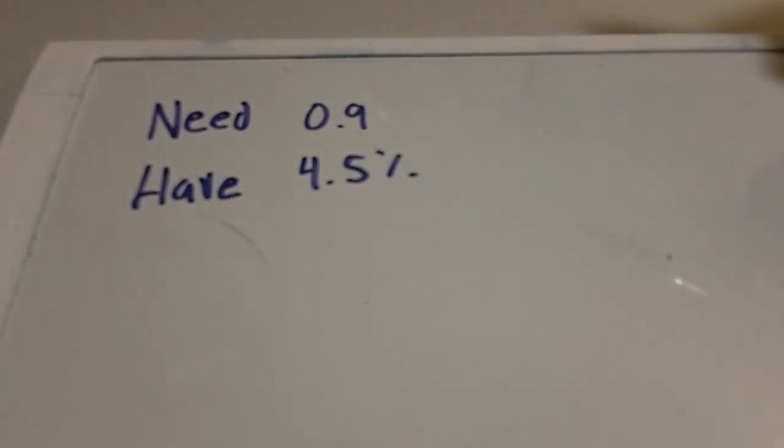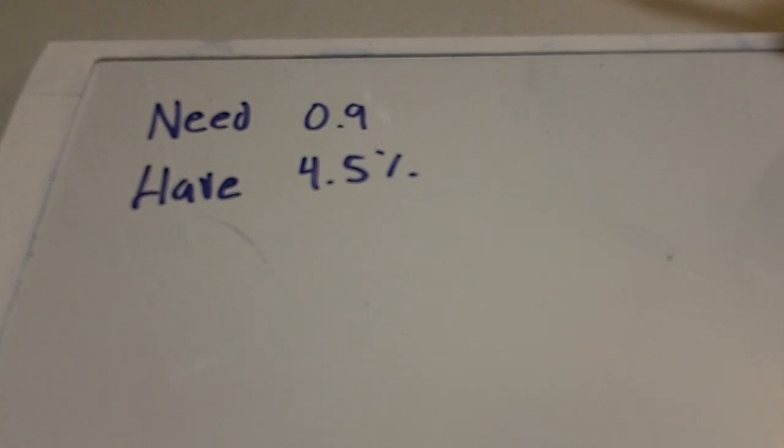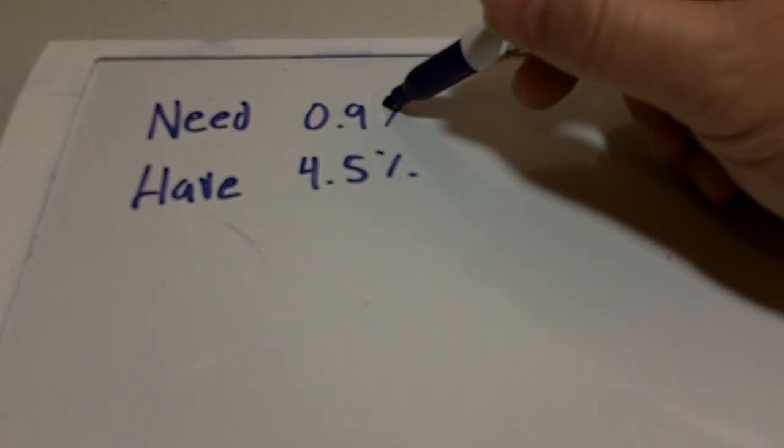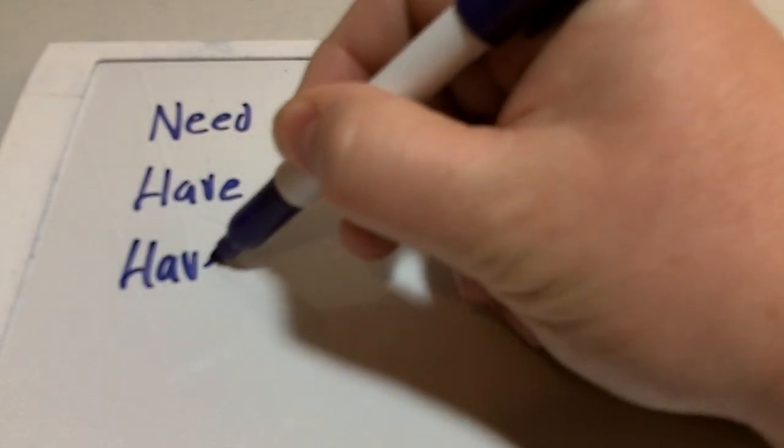Assuming no volume displacement effect, how much of the 4.5 percent solution would you need to add to a bag of sterile water to produce 0.9 percent? Okay, so we also have a bag with 100 milliliters of water.